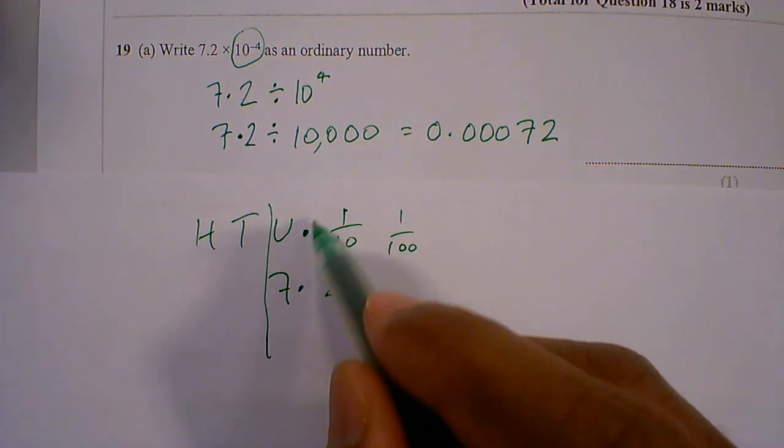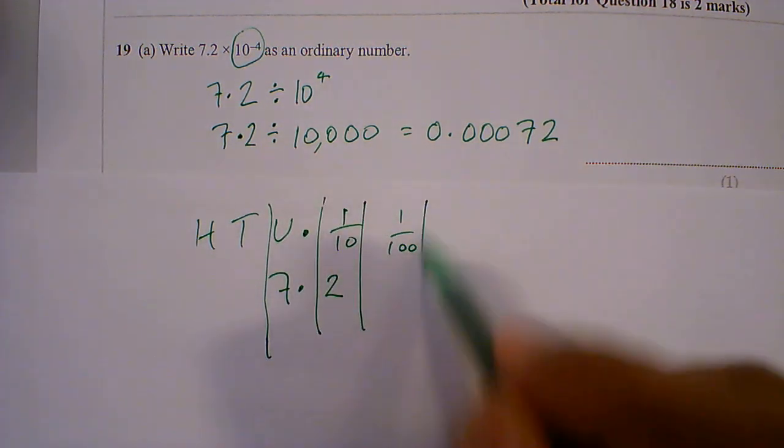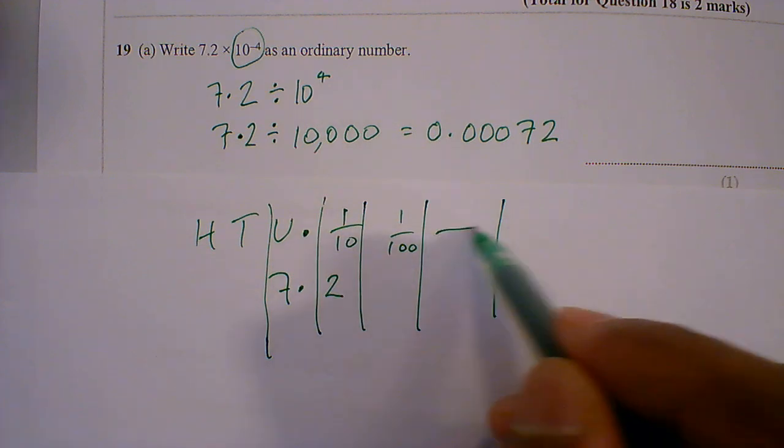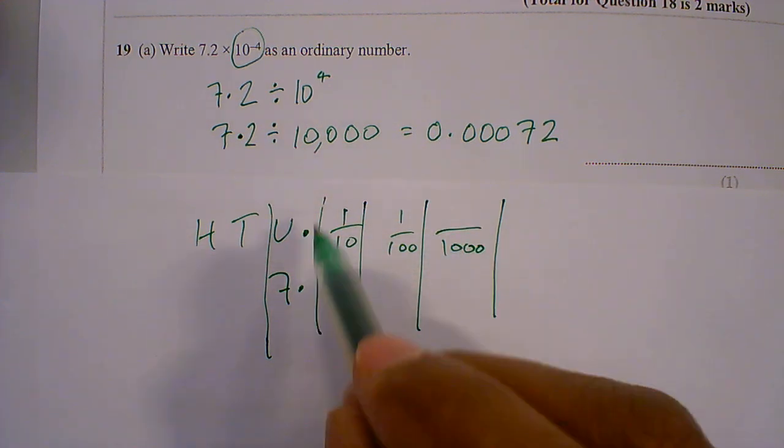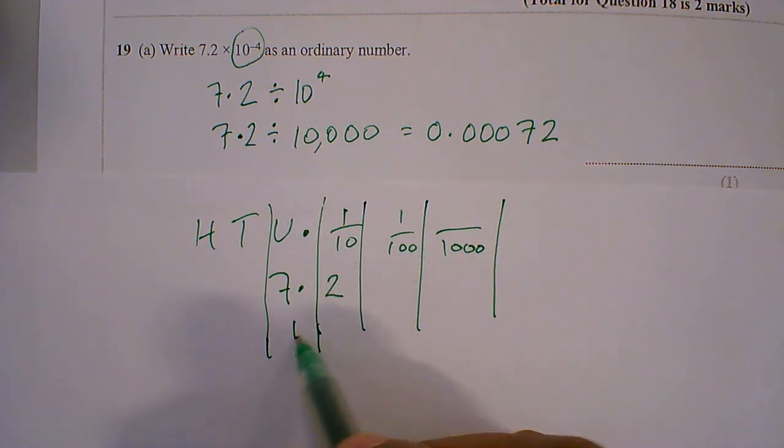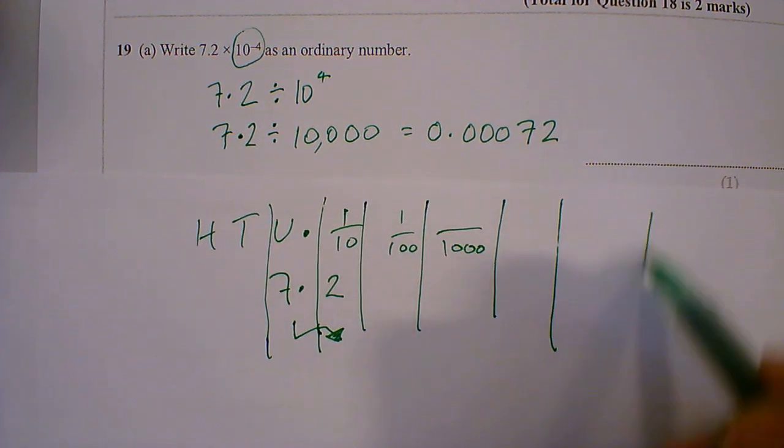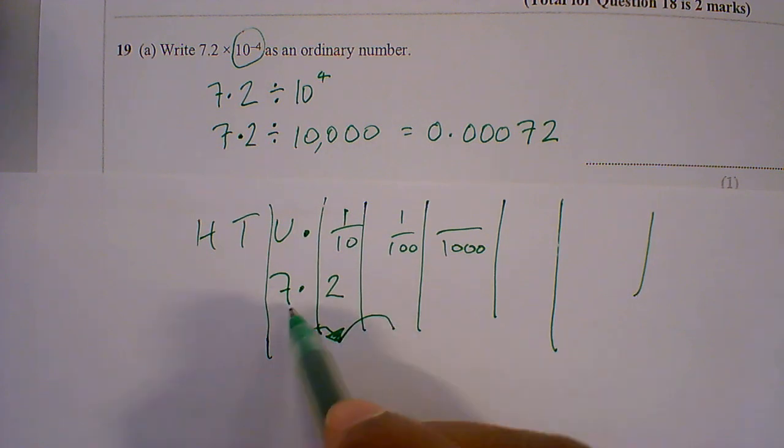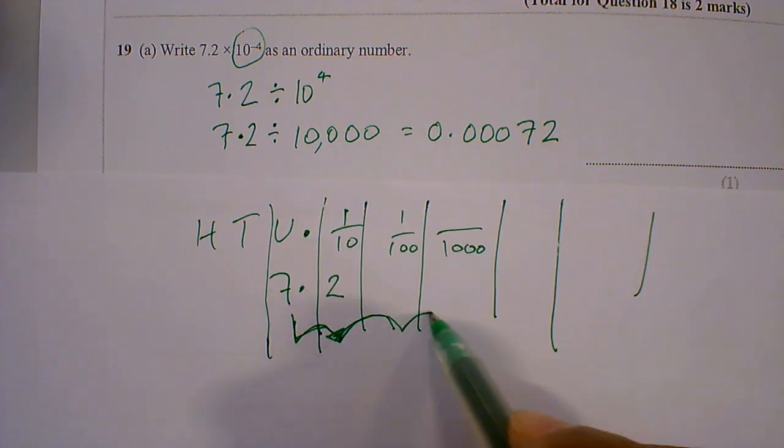So what we're now doing is we are jumping place values. Because we're dividing, we are moving to the right, the numbers are jumping to the right 4 place values. So that's 1, 2, 3, 4. So your 7 comes here.